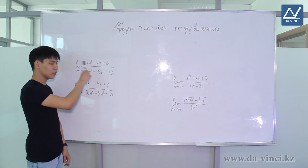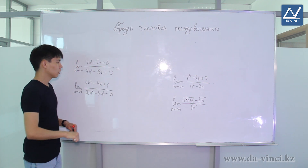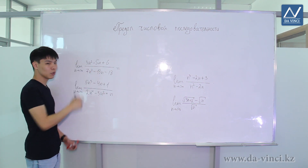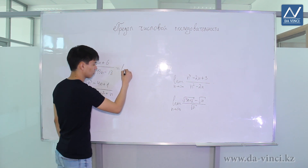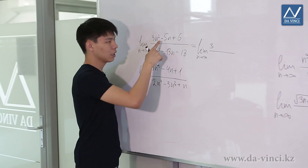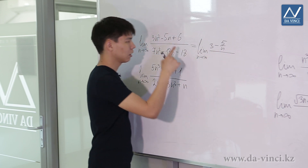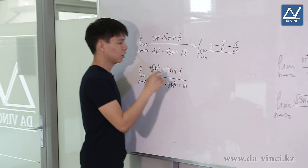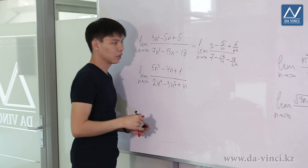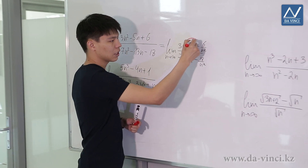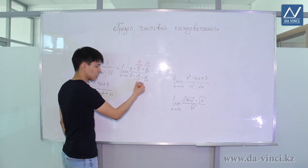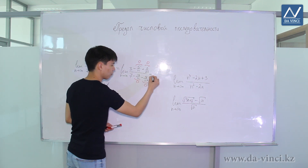Finally, let's look at four limit examples. For the first one, since the highest degree is a square, we divide numerator and denominator by N². Dividing gives (3N²/N² − 5N/N² + 6/N²) / (7 − 13/N − 18/N²), which simplifies to (3 − 5/N + 6/N²) / (7 − 13/N − 18/N²). As N→∞, all terms with N in the denominator go to 0, leaving 3/7.